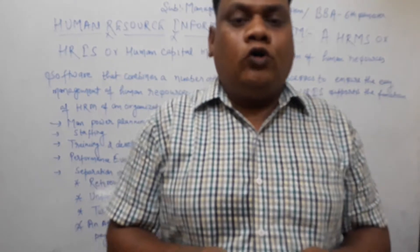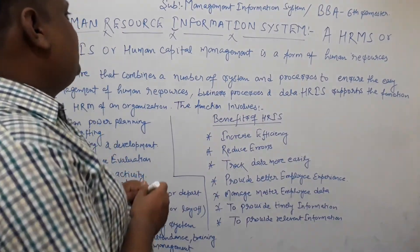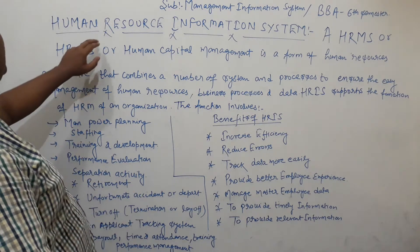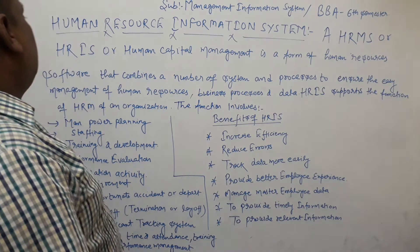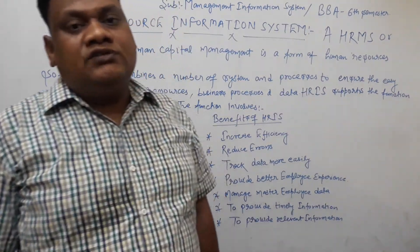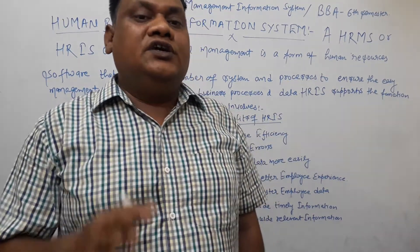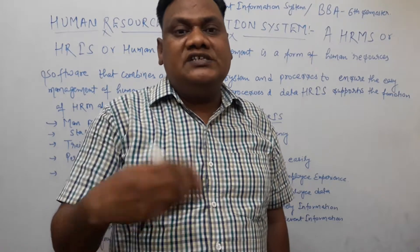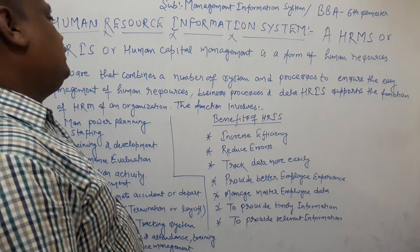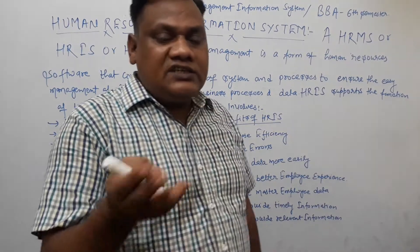Hello friends, I hope all of you are doing very well. Today our subject is Management Information System for BPA 6th semester, and today our topic is Human Resource Information System. This is the first question in BPA 6th semester MIS: what are the qualities of good information? We have completed that, and now the most important topic is human resource information system — what it is, what the problems are, what the functions are, and what the benefits are.